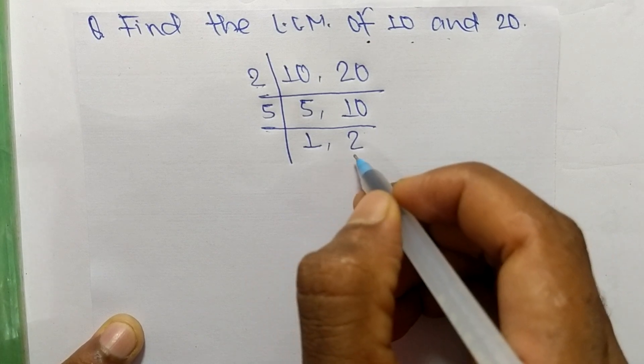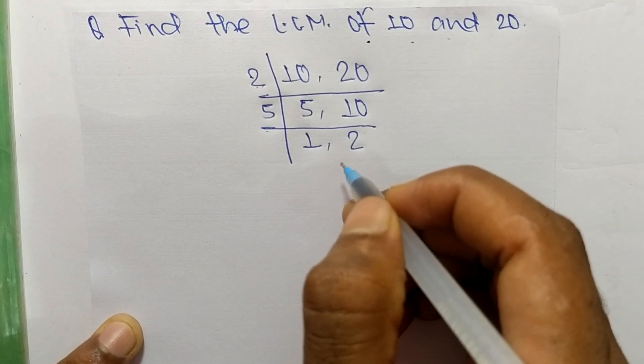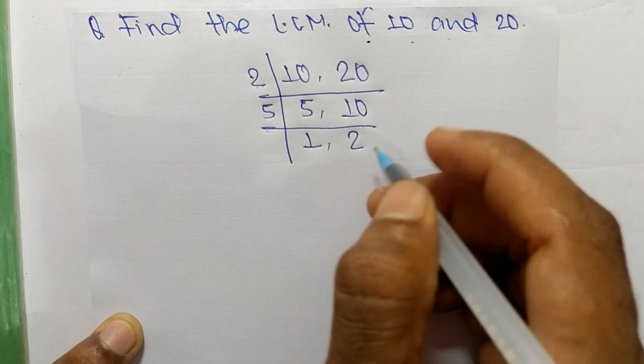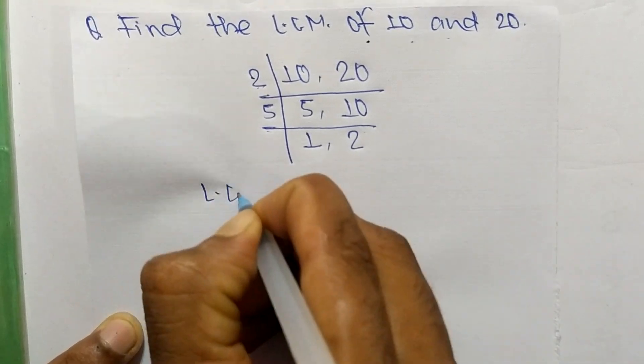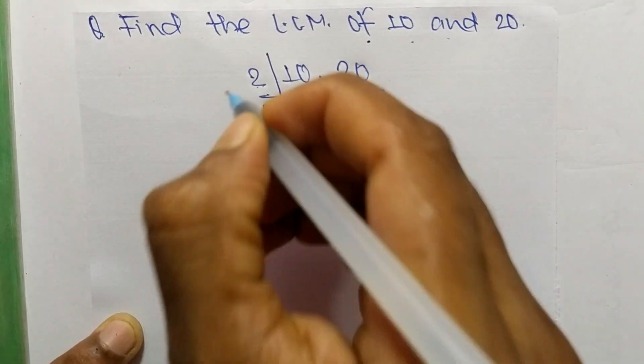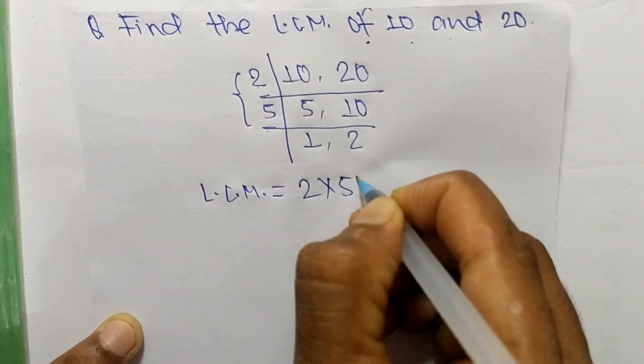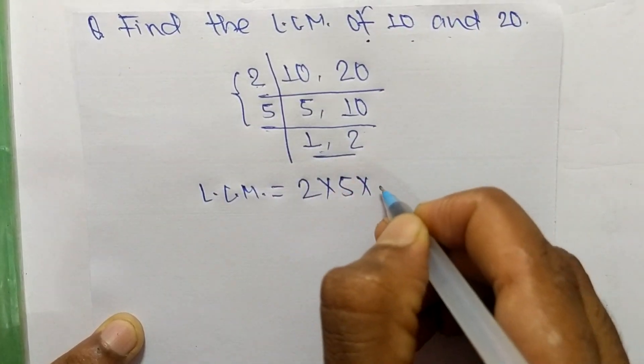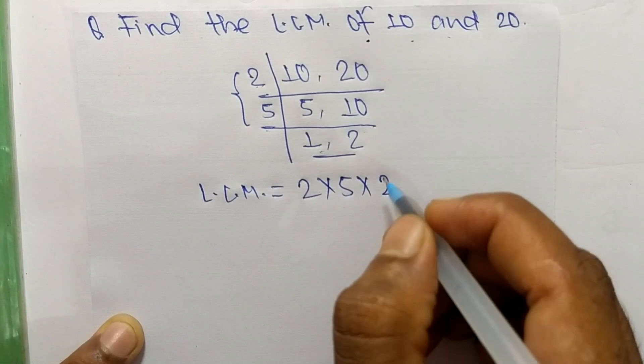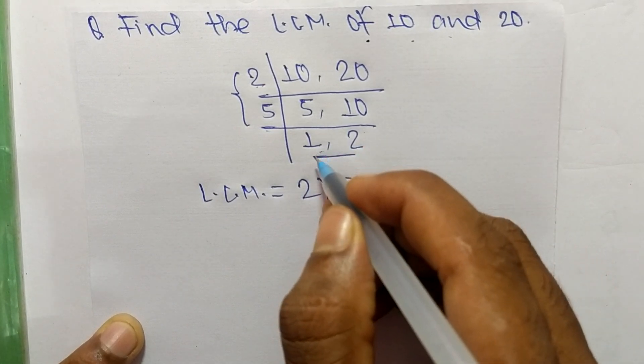So we get here 1 and 2 which are not exactly divisible by the same number. So its LCM is equal to 2 times 5 and from this part we take here only 2 and we neglect 1 because by multiplying any number with 1 we get the same result.